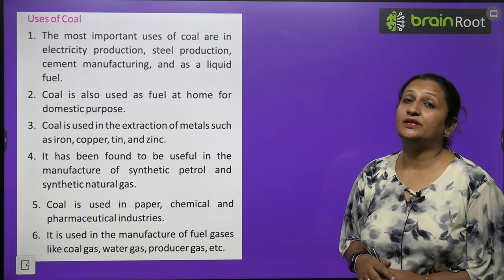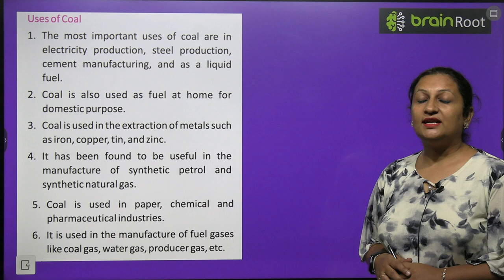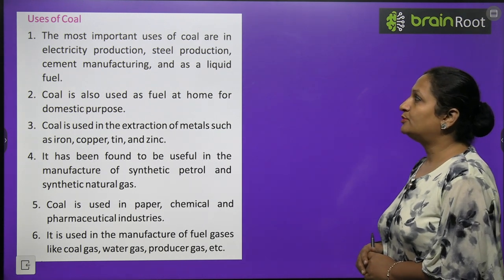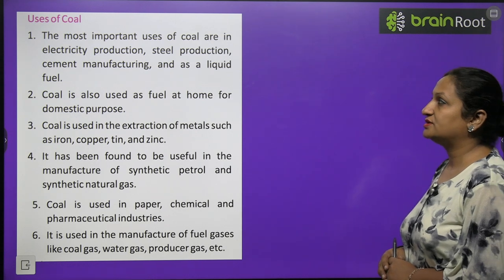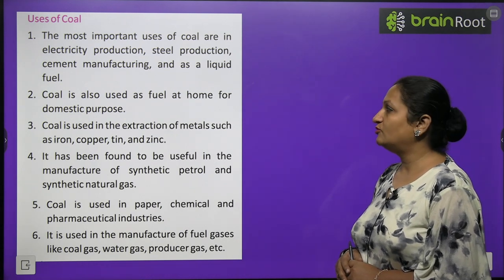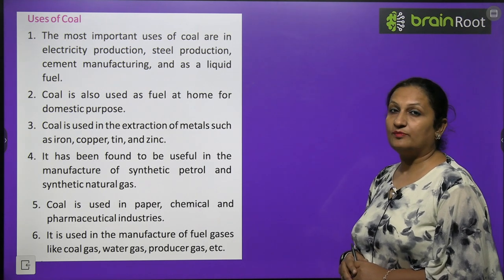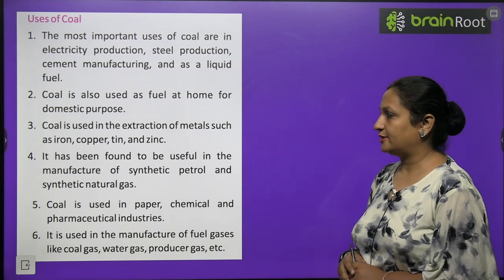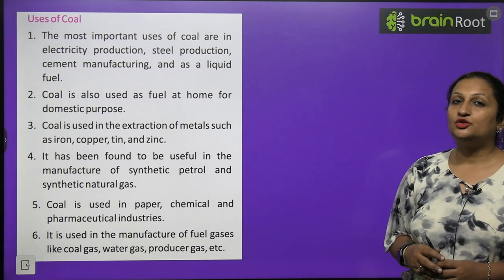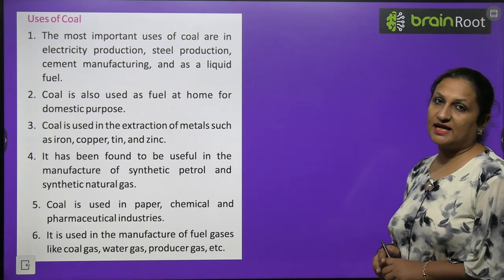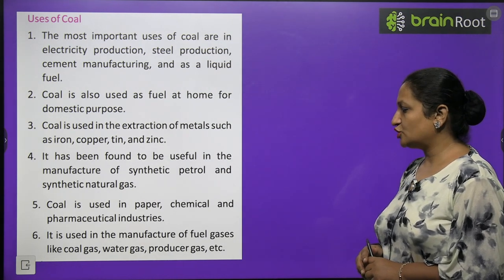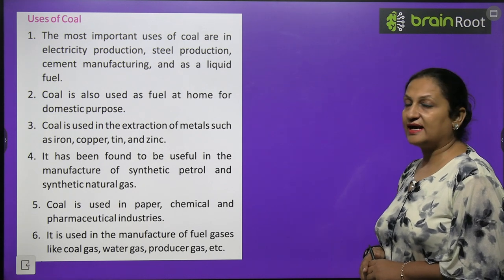Uses of coal: coal is a very important ingredient in the manufacture of electricity. Previously, steam engines also used coal to produce steam. The most important uses of coal are electricity production, steel production, cement manufacturing, and as a liquid fuel. Coal is also used as a domestic fuel, in the extraction of metals such as iron, copper, tin, and zinc, and in the manufacture of synthetic petrol and synthetic natural gas. It is also used in paper, chemical, and pharmaceutical industries, and in the manufacture of fuel gases like coal gas, water gas, and producer gas.